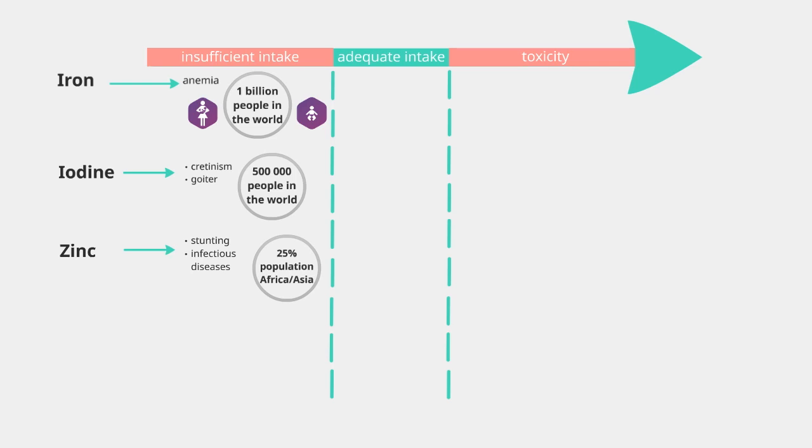Finally, the prevalence of marginal deficiency in zinc can reach 25% in Africa and Asia, and also leads to stunting and to a higher risk of infectious disease. In industrialized countries, only marginal deficiencies in minerals occur. This is a case for calcium in adolescents or seniors, and iron in women, influenced by menstruation.